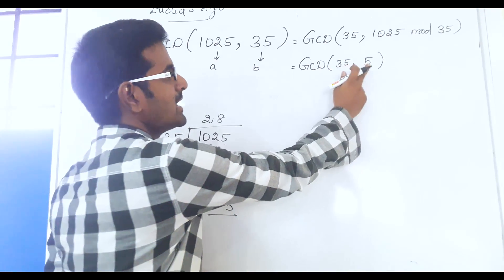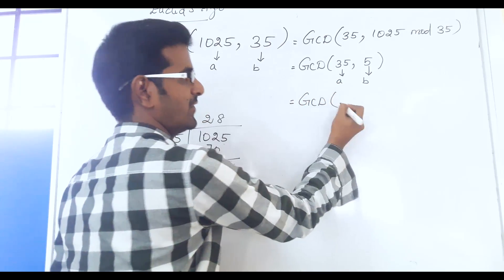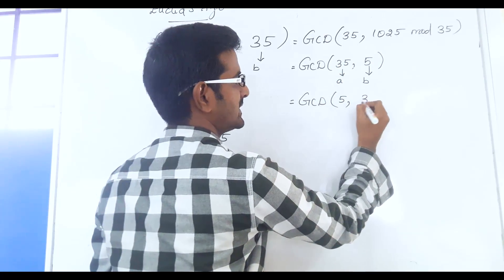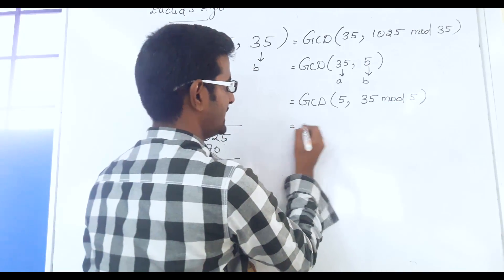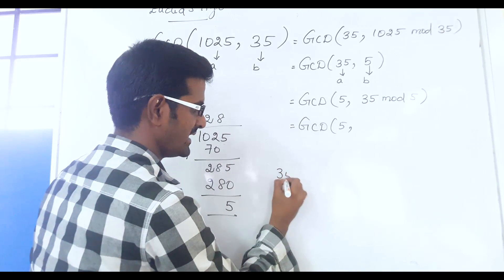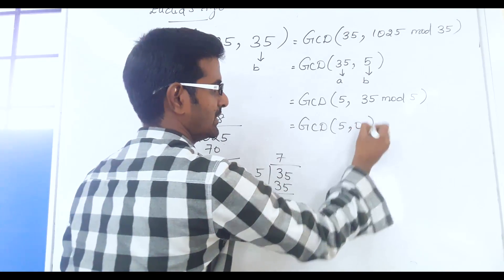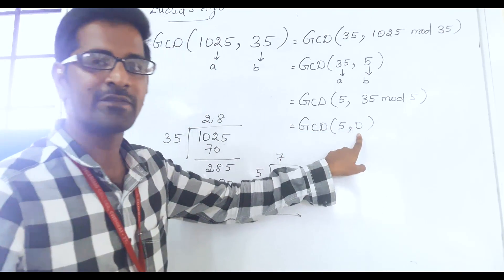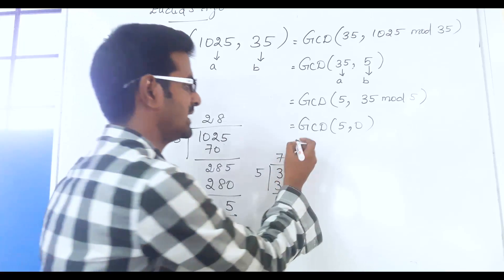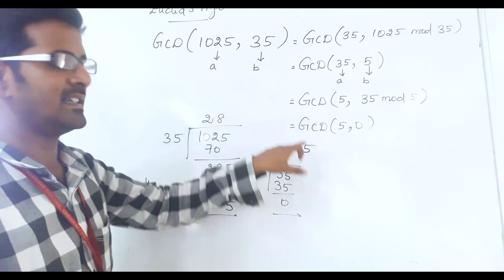Now this is A = 35 and B = 5. We apply the formula again: GCD(35, 5) = GCD(5, 35 mod 5). Dividing 35 by 5: 5 sevens are 35 with remainder 0. So we get GCD(5, 0). The process stops when the second parameter becomes 0, so the first parameter is the GCD value — which is 5. Therefore GCD of 1025, 35 is equal to 5.